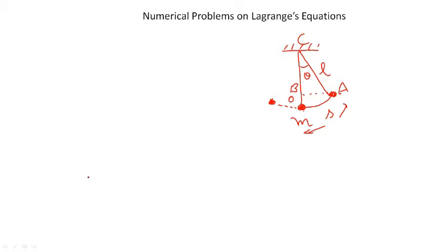Hello everyone. Now we will solve some numerical problems based on Lagrangian equations. The first problem is to find the time period of oscillation of a simple pendulum using the Lagrangian equations. In the figure, M is the mass of the bob, suspended through a string of length L from the point C. At any point A, it has the angular displacement theta and the arc length is S.